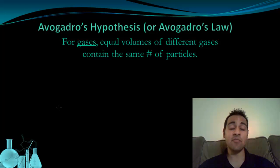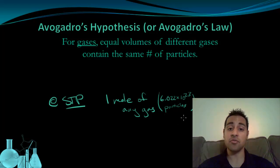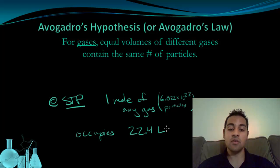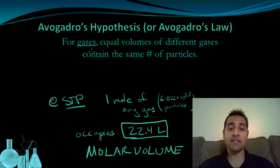This gives us a very neat relationship we can use. At STP — standard temperature and pressure — one mole of any gas, which is the same as 6.022 × 10²³ particles of any gas, occupies 22.4 liters of space. So one mole of any gas at STP has a volume of 22.4 liters. We call this the molar volume. Remember, this is only for gases, and it's only true at STP. One mole equals 22.4 liters.